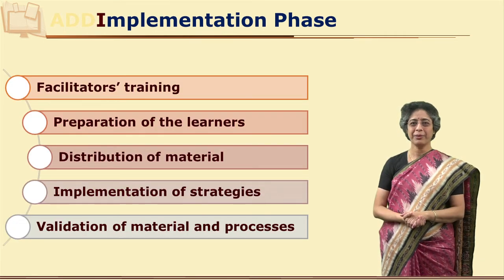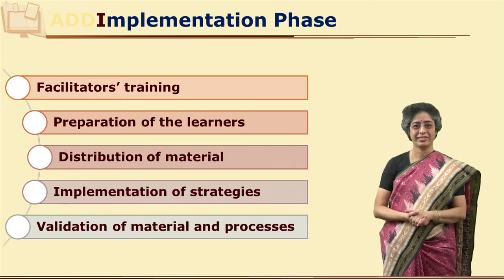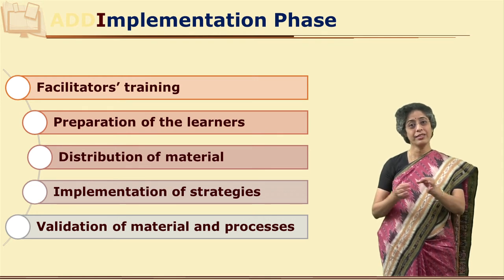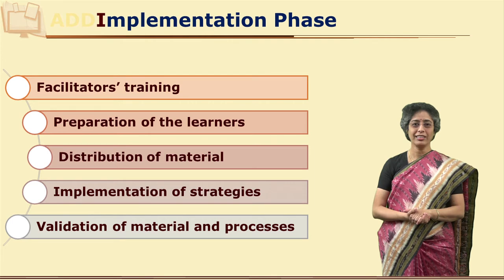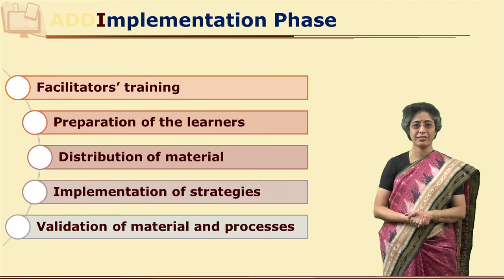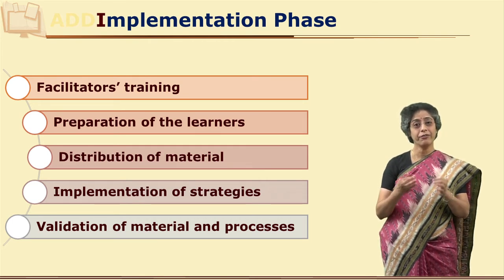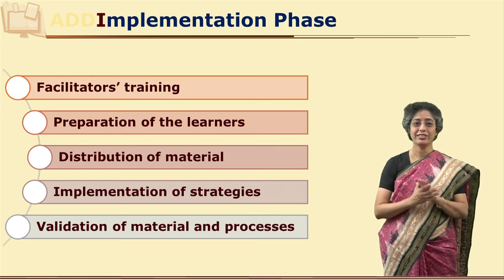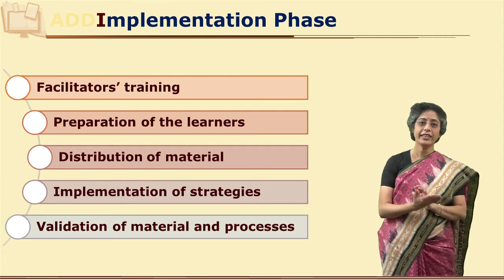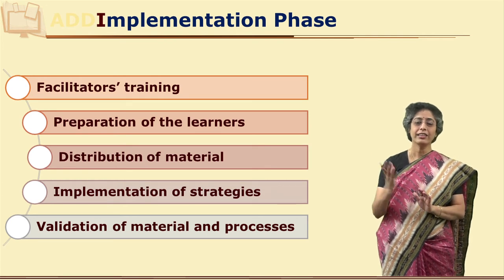The next very important phase is implementation. For implementation, you need to train even facilitators. For example, counselors at study centers — their role is different from that of a teacher. E-tutors in an online learning environment also have a role different from regular face-to-face teachers. So, these facilitators need to be oriented and made aware that they are facilitators and not instructors. They can support learners, help learners, and guide them to solve their problems, but they are not there to teach the content entirely from the beginning.